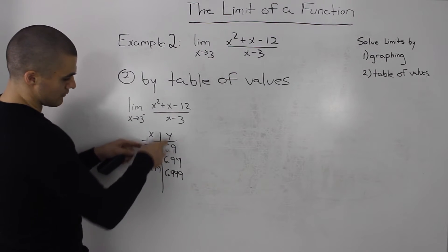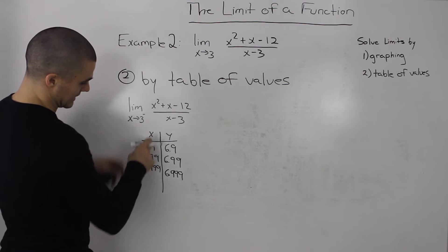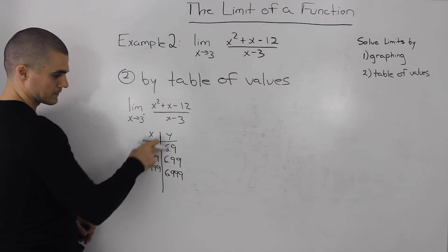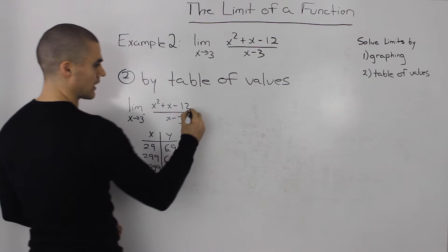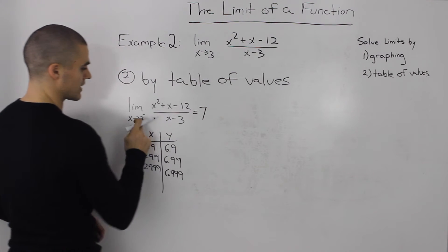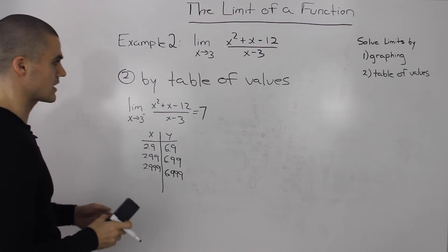It's pretty obvious from this table that as x is approaching 3 from the left side, y is approaching 7. So it's safe to say this limit equals 7 as x approaches 3 from the left side.